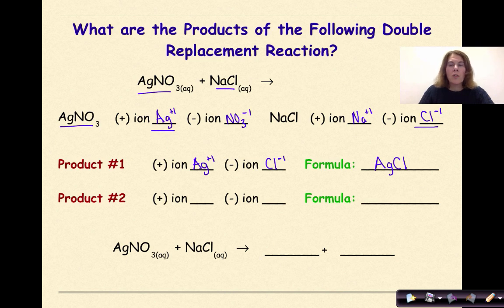For product 2 we are going to take the Na+ with the NO3-. The +1 and -1 will cancel each other out. So our formula will be NaNO3.